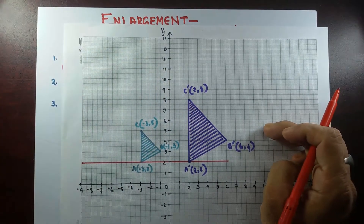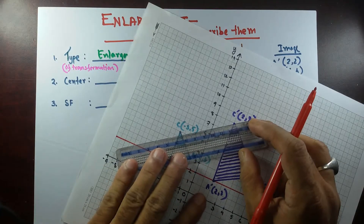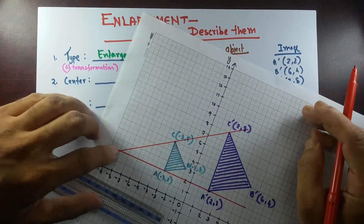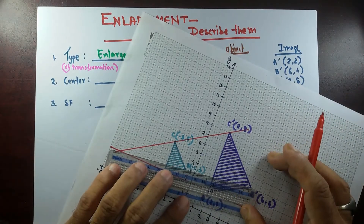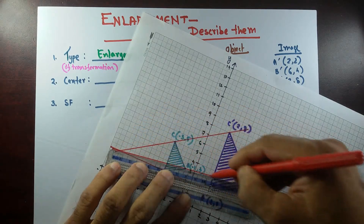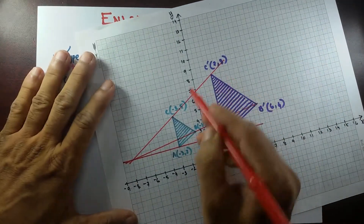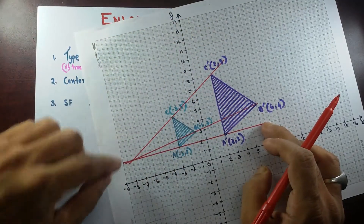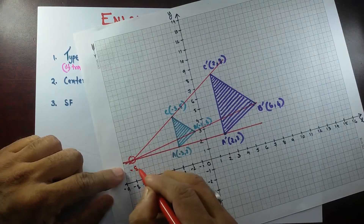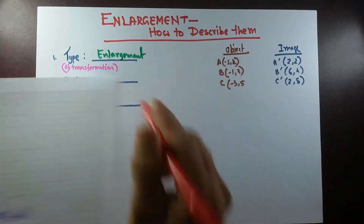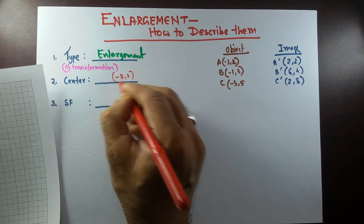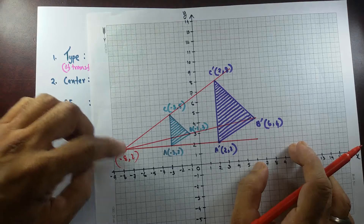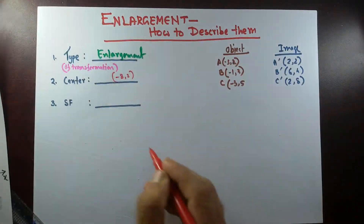Thinking about C to C' and B to B' — joining those corresponding pairs gives the same meeting point. All three pairs of corresponding points — A A', B B', and C C' — when joined, the lines intersect at (−8, 2). So minus eight two is my center of enlargement. We've found the type of transformation (enlargement) and the center of enlargement.